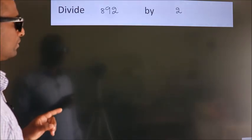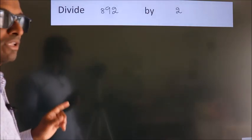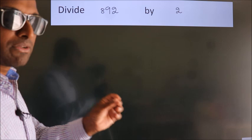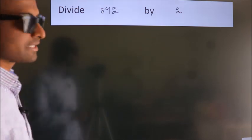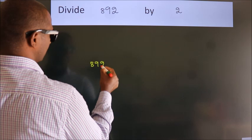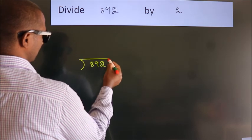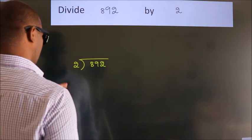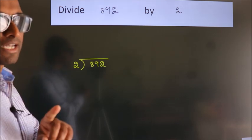Divide 892 by 2. To do this division, we should frame it in this way. 892 here, 2 here. This is your step 1.